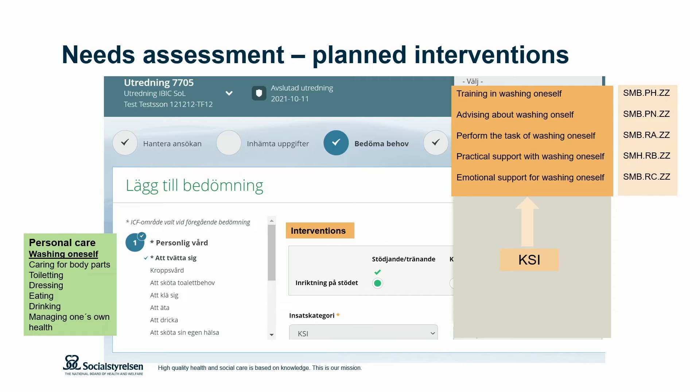Here you can see how KOSI complements the process, because in the digital structured documentation all interventions targeting washing oneself are shown — training washing oneself, advising, performing the task, practical support and emotional support. This makes it easier for professionals to do documentation directly in the electronic health record. The codes are behind the structured documentation because professionals and patients do not need to see the codes.